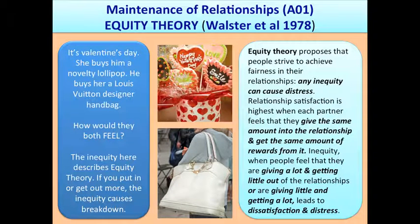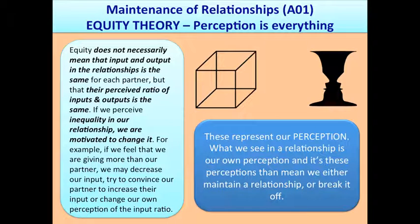Equity theory proposes that people strive to achieve fairness in their relationships. Any inequity can cause distress. Relationship satisfaction is highest when each partner feels that they give the same amount into the relationship and get the same amount of rewards from it. Inequity — when people feel that they are giving a lot and getting little out of relationships, or are giving little and getting a lot — leads to dissatisfaction and distress. Equity does not necessarily mean that input and output in the relationship is the same for each partner, but that their perceived ratio of inputs and outputs is the same. If we perceive inequality in our relationship, we are motivated to change it.